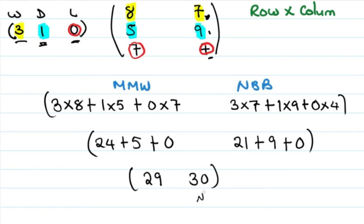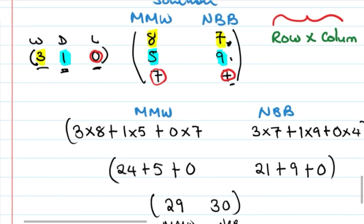So this is for NBB and this is for Mighty Wanderers. This is an example of matrix multiplication - that's how you solve this problem.